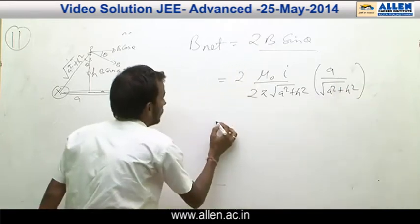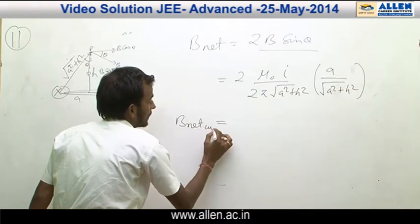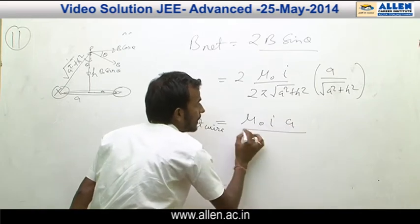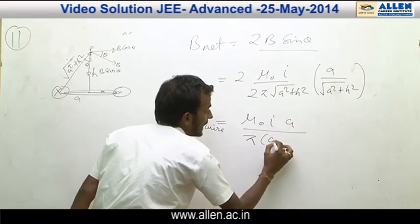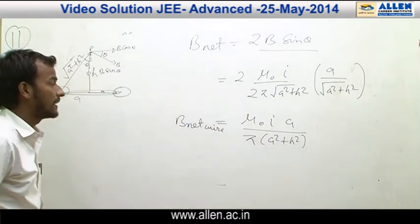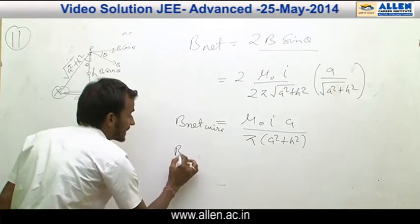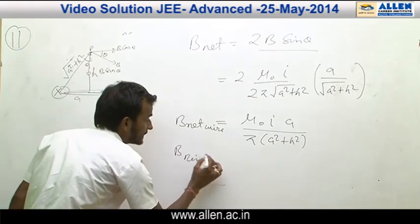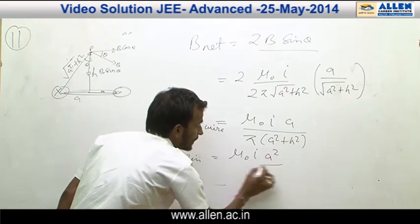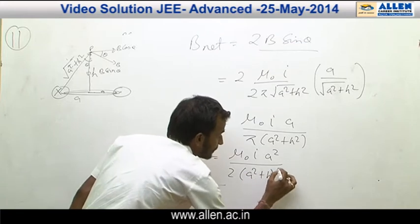Therefore, the net magnetic field due to the wire is μ₀IA / (π(A² + H²)). The magnetic field on the axis of the ring is μ₀IA² / (2(A² + H²)^(3/2)).